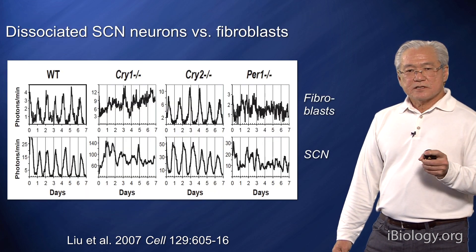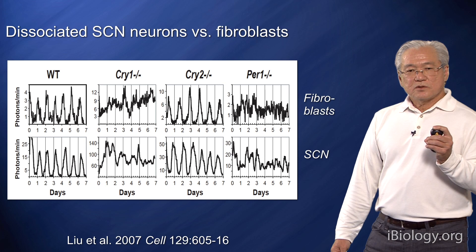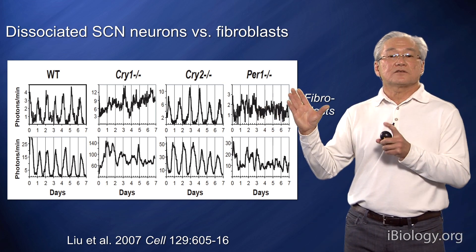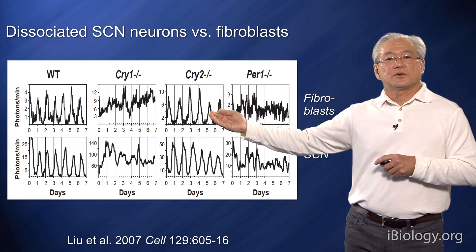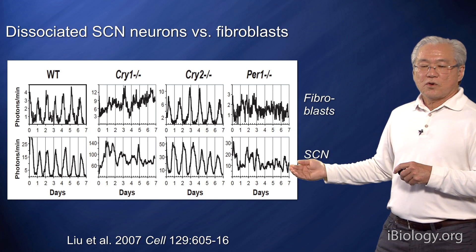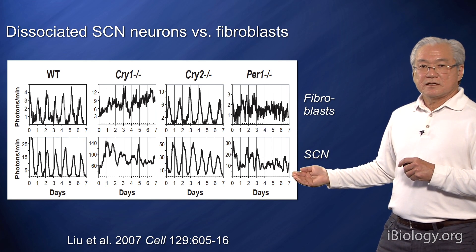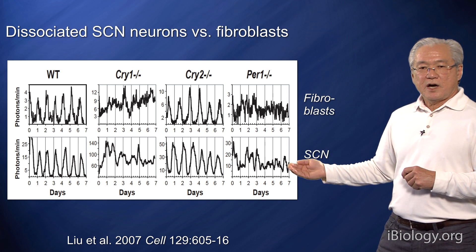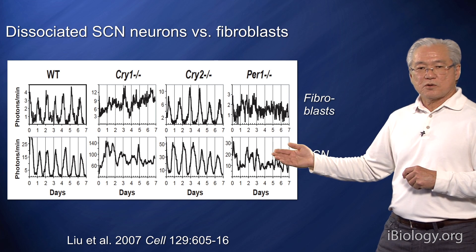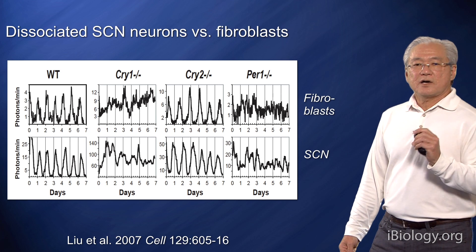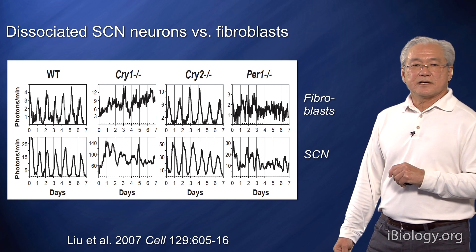To look into this further, we then asked what effect do these mutations have on the single-cell rhythm? These are single-cell recordings from either fibroblasts or dissociated isolated SCN neurons. And what we find is a very interesting result: the gene mutations cry1 and per1 have the same effect in a fibroblast as they do in the SCN neuron.